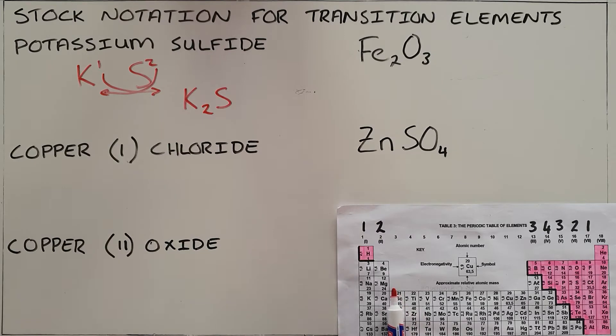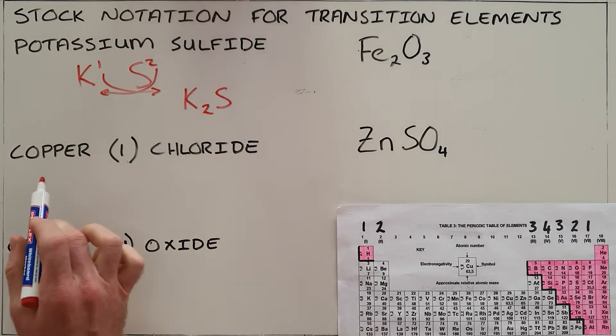What we did not explain is how you determine the valency for elements in group 3 to 12, also known as the transition elements. So today we are going to do two or three examples of that.